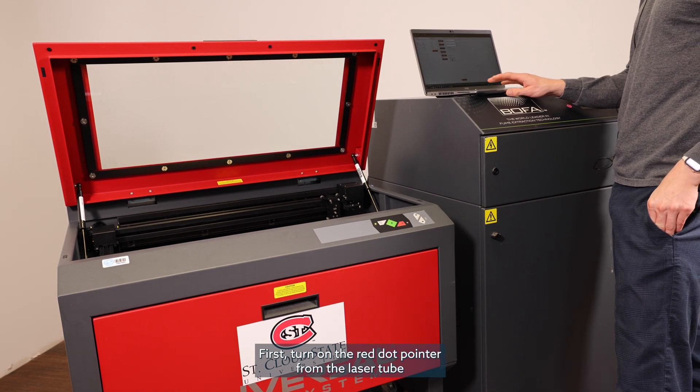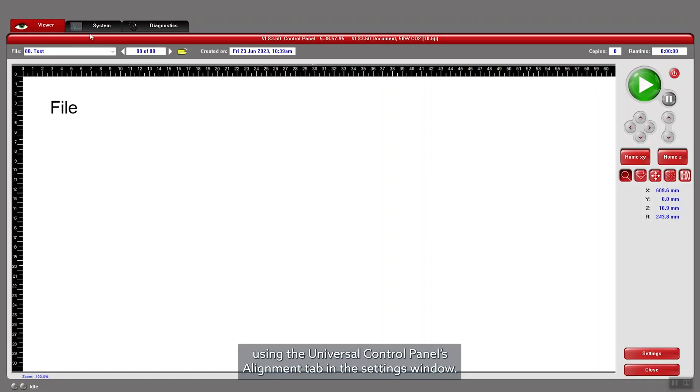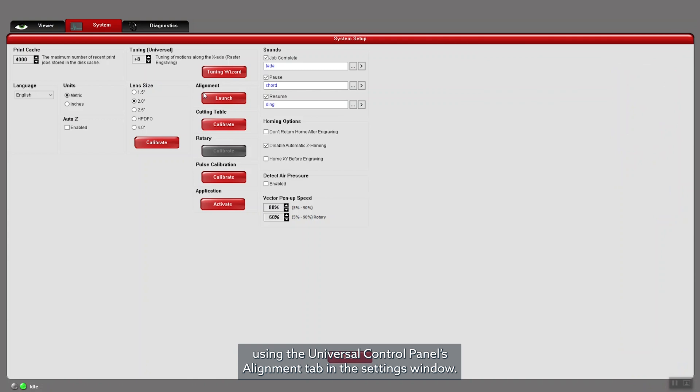First, turn on the red dot pointer from the laser tube under the universal control panel's alignment tab in the settings window.